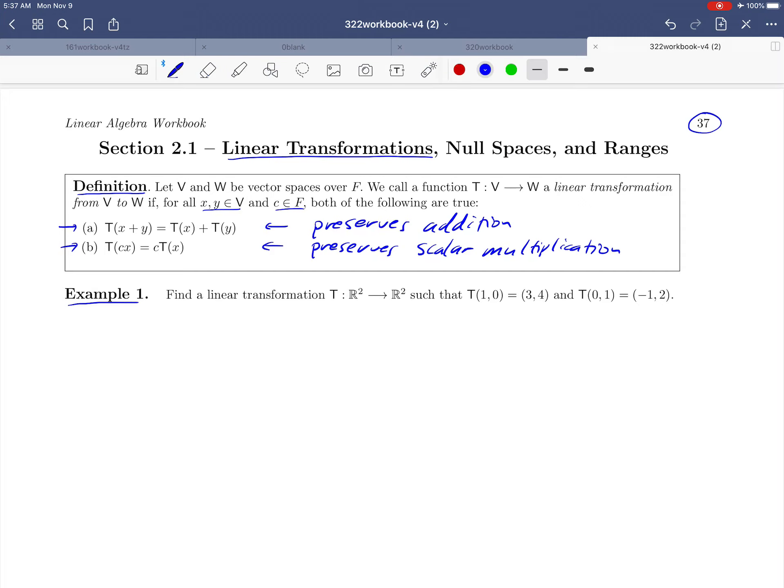So let's get started by supposing that T is linear. They want us to find a linear transformation with the two points that they gave us, T of (1, 0) equals (3, 4) and T of (0, 1) equals (-1, 2). Now one observation that we might make is there's something kind of interesting about the two inputs that they gave us, these two vectors (1, 0) and (0, 1). You might recognize those as being the standard basis vectors for R². We can build any vector in R² using a linear combination of those two vectors.